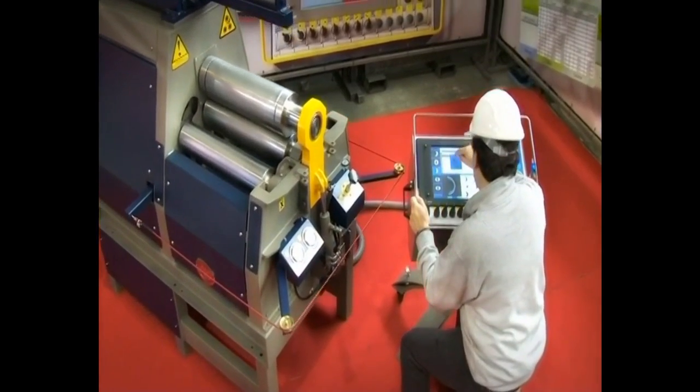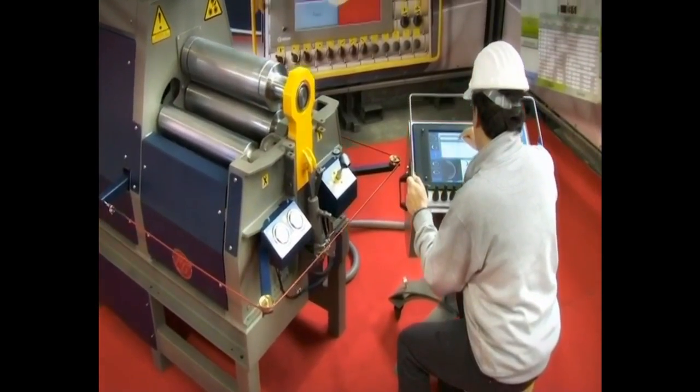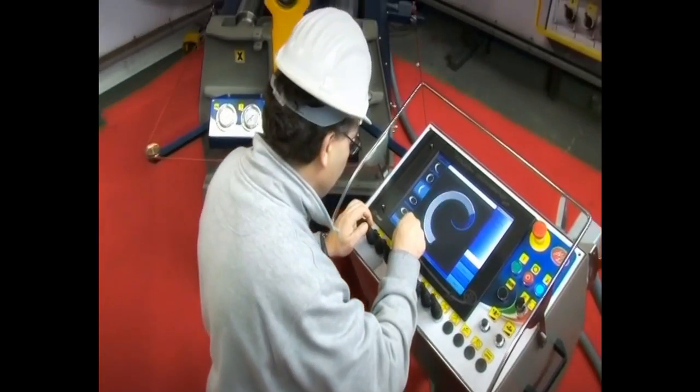We are now showing the complete procedure for the bending of a shape using the MG rolling machine equipped with a touch command EvoCNC.